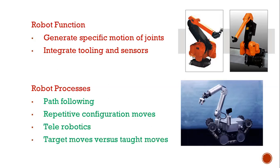Taught moves differ from target moves. In taught moves, a learning-type capability is provided to the robot where data is stored in memory and the robot works according to that stored data. In target moves, targets are set and inverse kinematics is applied to the manipulator, then performed with the help of a controller. These are the main processes of robots.